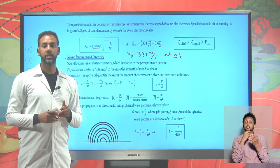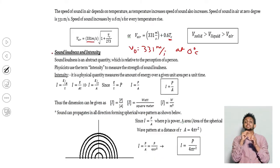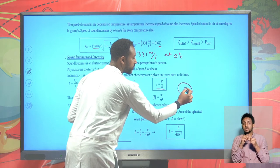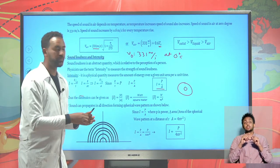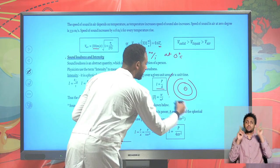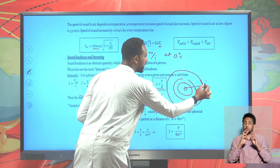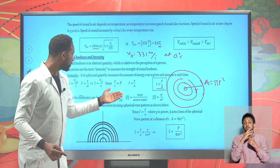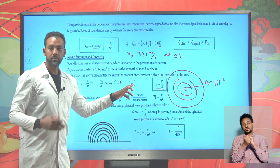Sound loudness and intensity: for a given sound, its loudness may be expressed in terms of intensity. Intensity can be mathematically expressed as power P over area. As sound propagates from a source, it propagates in all directions forming a spherical wave pattern. At a distance R from the source, the spherical wave pattern has a surface area of 4πR². So intensity I = P / (4πR²). For a constant power P, the area changes at different distances R.